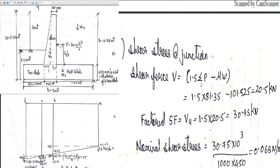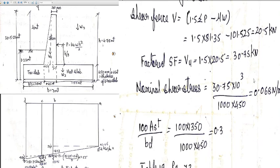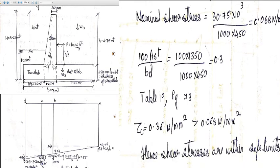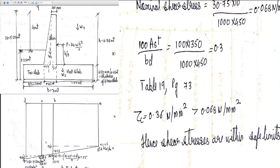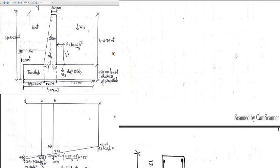We also check shear stress at the junction of the shear key. The shear force V = 1.5 × (P − μW) = 1.5 × (81.35 − 101.522/1.5) = 20.5 kN, so the factored shear force = 1.5 × 20.5 = 30.75 kN. Nominal shear stress τv = 30.75 × 10³ / (1000 × 440) = 0.068 N/mm². From IS 456 Table 19 (page 73), for 100 Ast/(bd) = 100 × 1350/(1000 × 450) = 0.3, τc = 0.36 N/mm², which is greater than τv = 0.068 N/mm². Hence shear stresses are within safe limits.